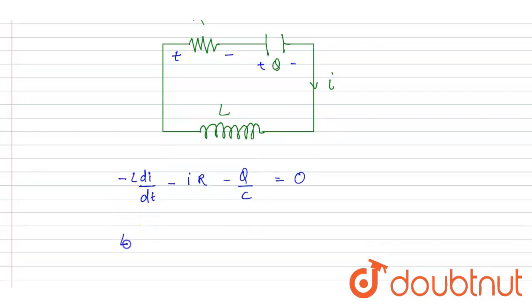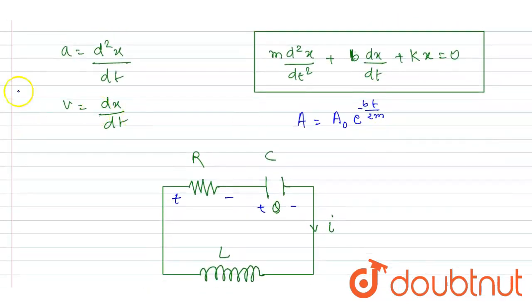So finally we can write down L d²Q/dt² plus R dQ/dt plus 1/C times Q equals 0. Now you can compare these two equations.